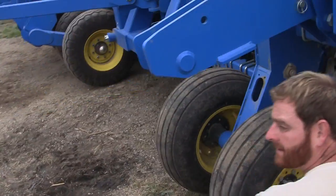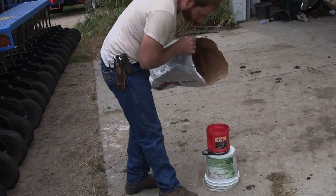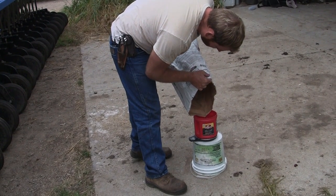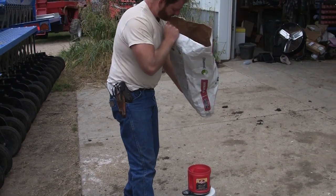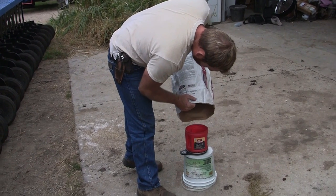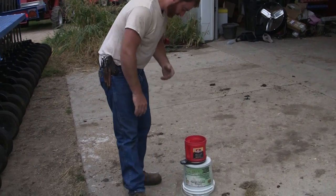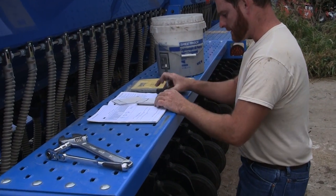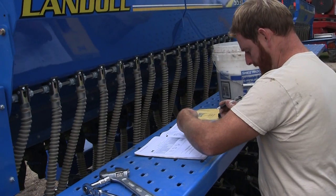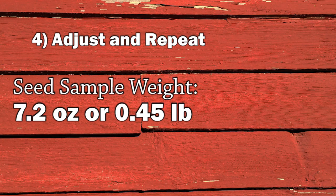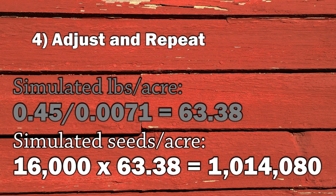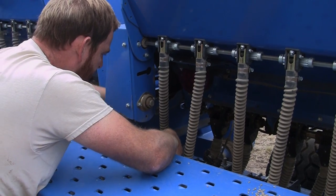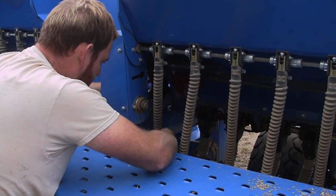We'll start here and do our 20 revolutions again. We certainly have more seed, which is good. We now have 7.2 ounces instead of 4.5, so that's good. After adjusting the seed meters, Wade's sample was about 0.45 pounds, which meant his seeding rate was a little over 63 pounds per acre — just about right on his target seeding rate of a million seeds per acre. Now all he has to do is adjust the rest of the drill accordingly, and he's ready to plant.